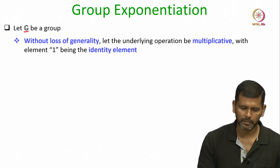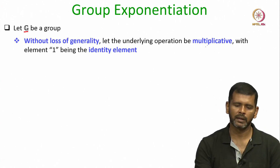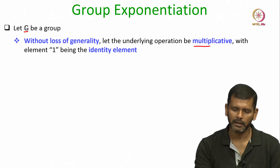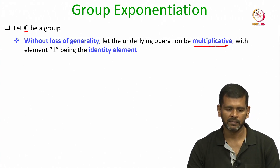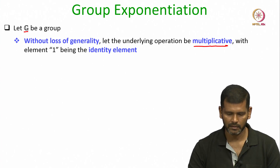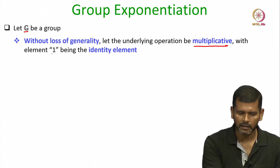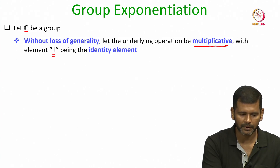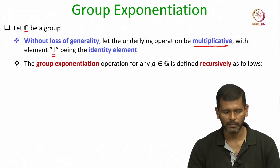Let G be a group, and without loss of generality I assume the underlying operation is multiplicative, but whatever I am discussing holds even if the underlying group operation is additive. Since I am considering a multiplicative group, I will be denoting the identity element by the notation 1. This should not be confused with the integer 1.